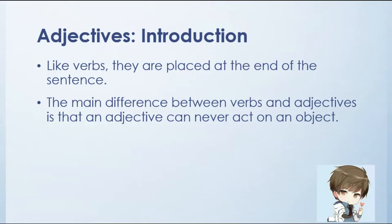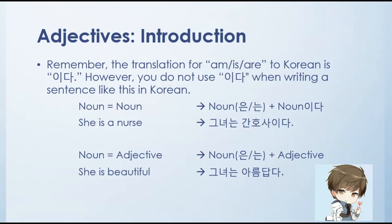Moving on, we have adjectives. Adjectives are placed at the end of the sentence, just like verbs. The difference is they can never act on an object. Remember that the translation for 'am,' 'is,' or 'are' in Korean is ida. However, you cannot use ida when writing a sentence with a noun equal to an adjective. When noun equals noun: noun + un or nun + noun + ida. For example, 'She is a nurse': gunyonun, ganho sa ida. When noun equals adjective: noun + un or nun + the adjective — no ida added. For example, 'She is beautiful': gunyonun, arumdapta. The word arumdapta is itself the translation of beautiful — no ida at the end.